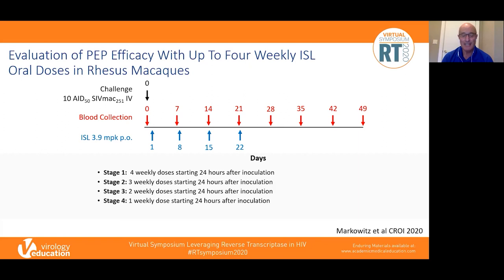One other thing I haven't mentioned is that Islatravir is also quite easily formulated not only orally but also as an absorbable polymer. There's research looking at its ability to be implanted and provide protection as PrEP over a period of as long as 12 months.